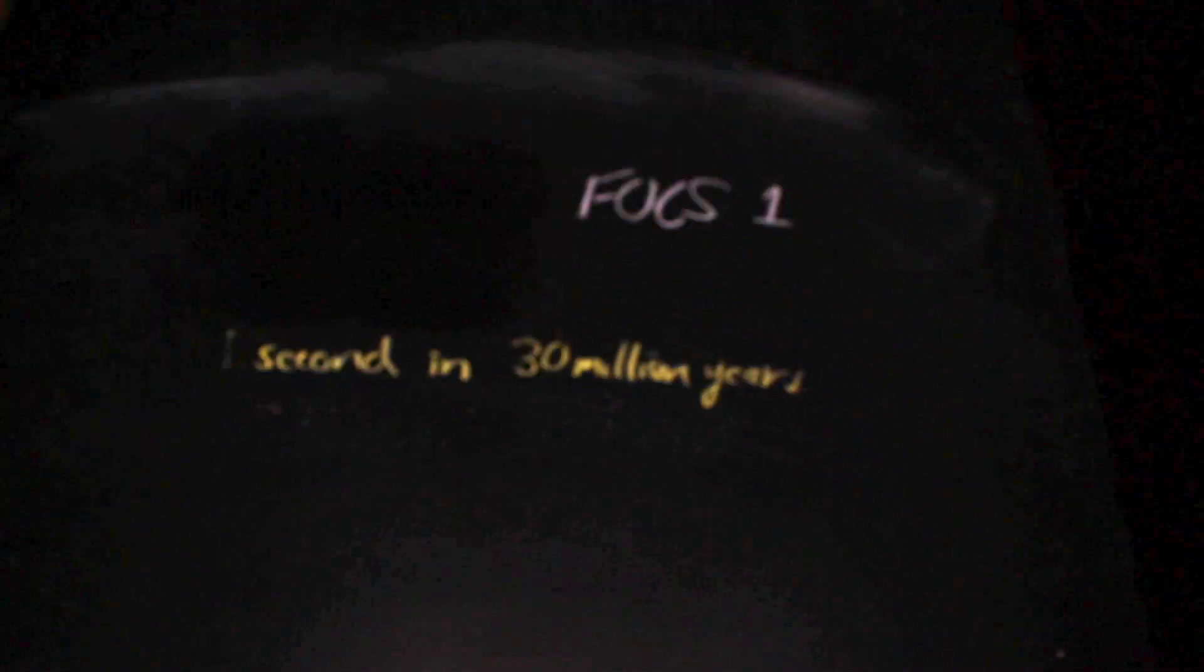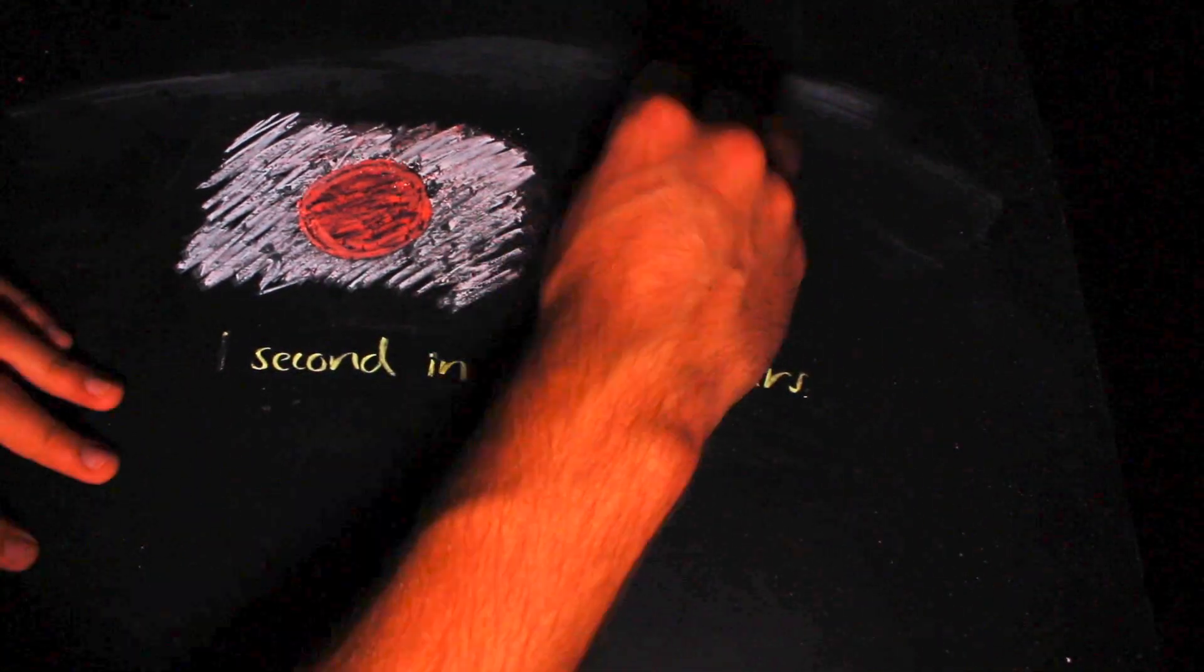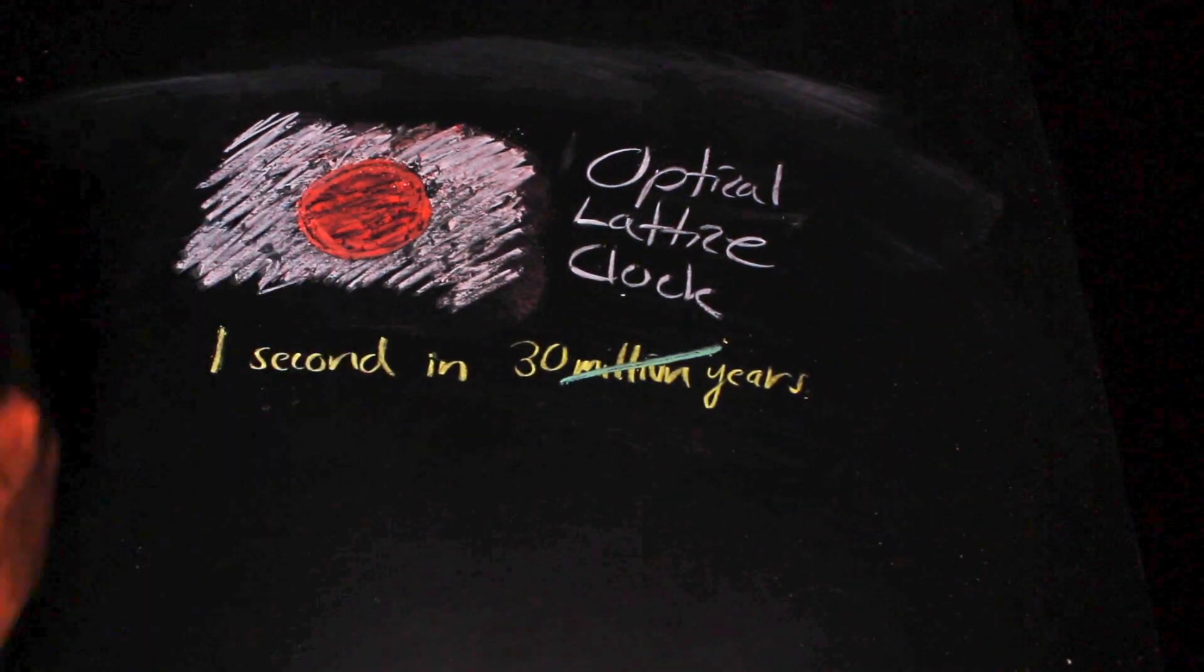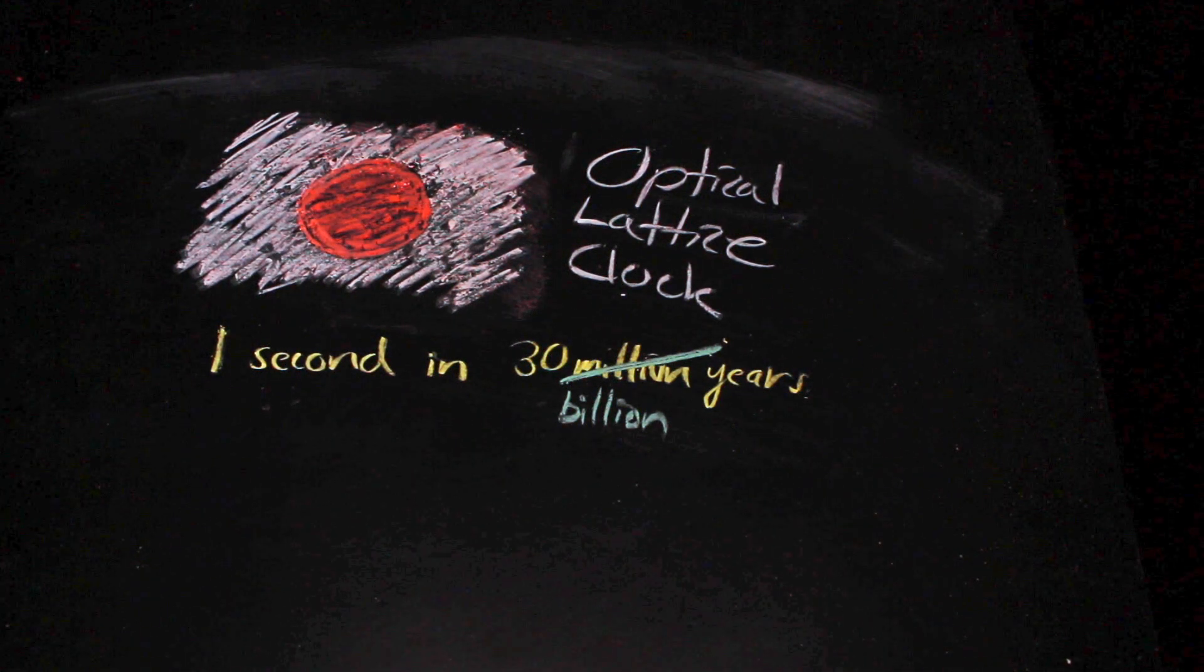Even better than that, the Katori laboratory at the University of Tokyo in Japan houses an optical lattice clock that looks to provide an even better definition for the second, having an uncertainty of one second in 30 billion years.